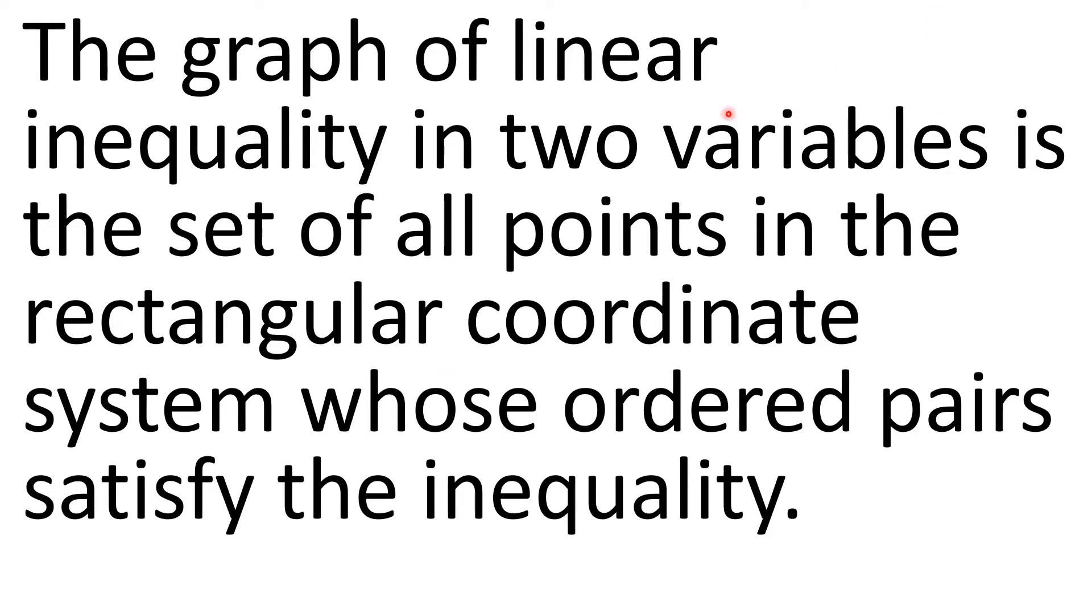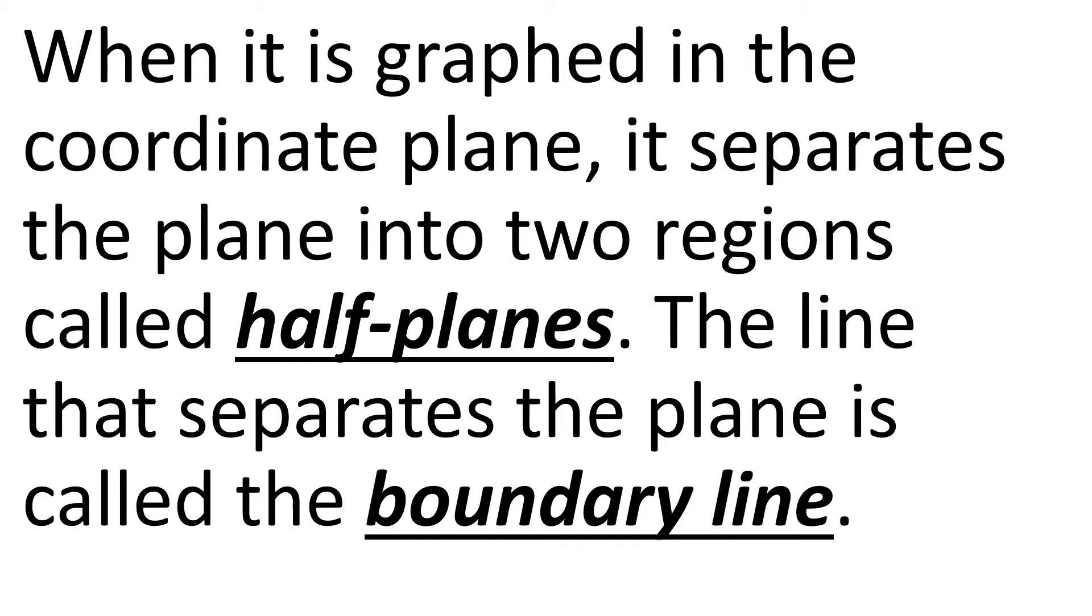The graph of linear inequality in two variables is the set of all points in the rectangular coordinate system whose ordered pairs satisfy the inequality. When it is graphed in the coordinate plane, it separates the plane into two regions called the half planes. When it's inequality class, there are two regions called half planes. The line that separates the plane is called the boundary line.